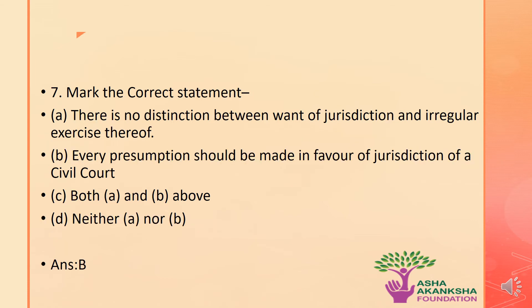The next question: mark the correct statement. The statements are: a) there is no distinction between want of jurisdiction and irregular exercise thereof, b) every presumption should be made in favor of jurisdiction of a civil court, c) both a and b, or d) neither a nor b. The correct answer is option B — every presumption should be made in favor of jurisdiction of a civil court is the only correct statement among these options.